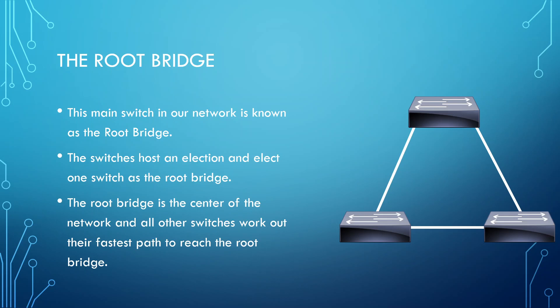To begin with, the root bridge. The way the STP process works is first we have to elect one switch to be the main switch in our network. This is called the root bridge. All the switches will speak to each other and engage in an election. That election determines which switch should be the root bridge, the main switch in our network, and in the end they decide on which switch is going to be the root bridge.